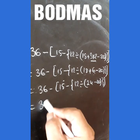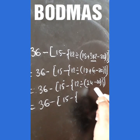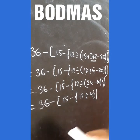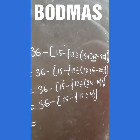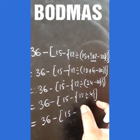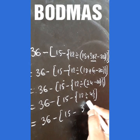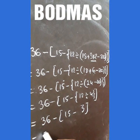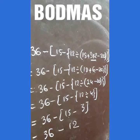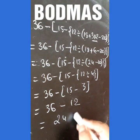Now we get 36 minus 15 minus curly bracket (24 minus 20), which gives 12 divided by 4. The common bracket is solved, giving 3. Now we solve the curly bracket: 15 minus 3 equals 12. And finally 36 minus 12 equals 24. This is the answer.